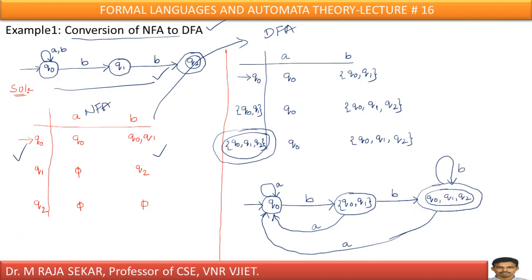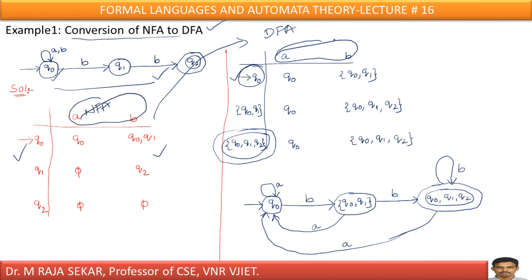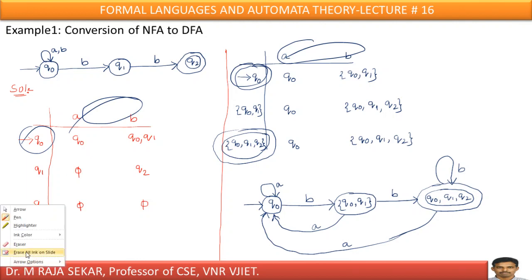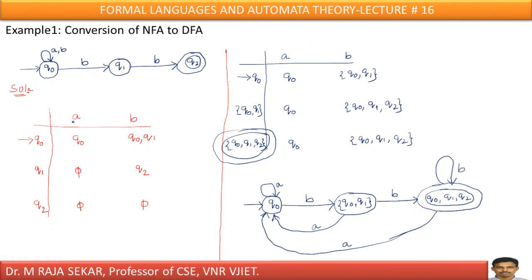If you observe the procedure from my previous slide, the initial state and inputs are the same for NFA as well as DFA. What is the initial state in the given question? That is Q0. Q0 must be the initial state in the corresponding DFA. What are the inputs in your NFA? A and B. Those A and B inputs must be the same in the corresponding DFA. So the initial state and inputs are the same — just I am copying Q0 and A, B.